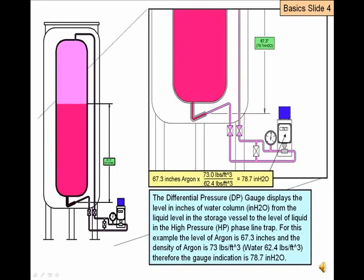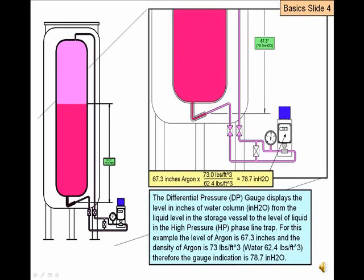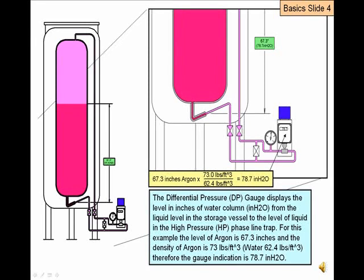Argon is about 17% heavier than water, and therefore the gauge reads 78.7 inches of water. The gas in the top of the tank will add to the total differential pressure, but has been ignored in this example to simplify the explanation.